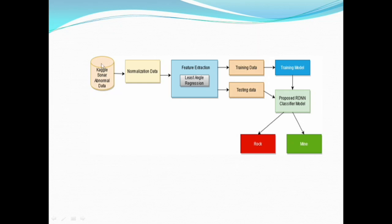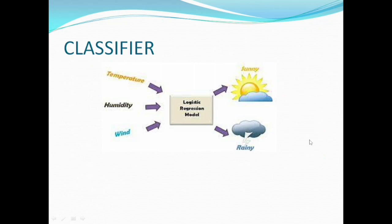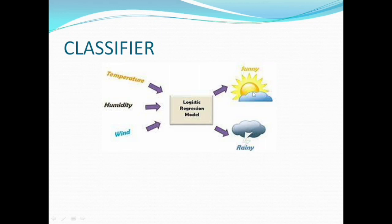First of all, we will have some experimental data, and that data will be called training data. This training data will be stored and given to the classifier. The classifier, based on training data, will classify whether that is a rock or a mine. The classifier we are using here is logistic regression. It is a binary classifier that takes available test data — the experimental data — and produces test data. It classifies test data based on experimental data, whether it belongs to class A or class B. Here we have two classes: rock or mine.